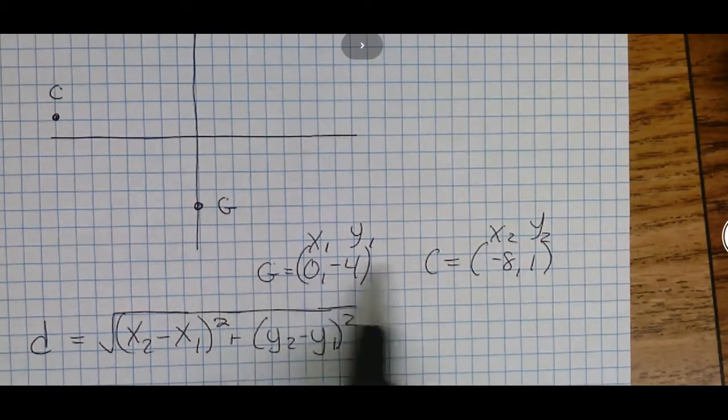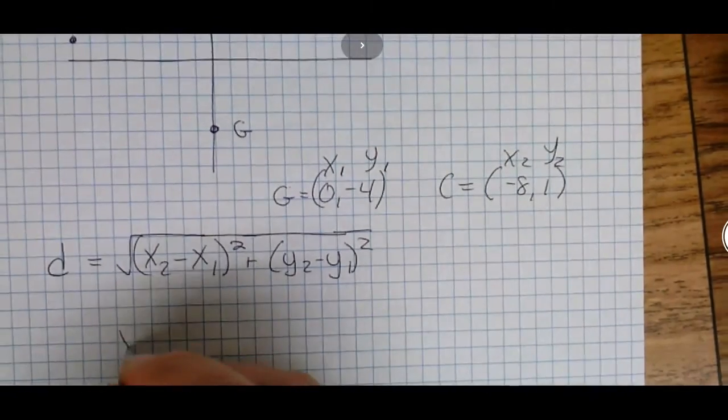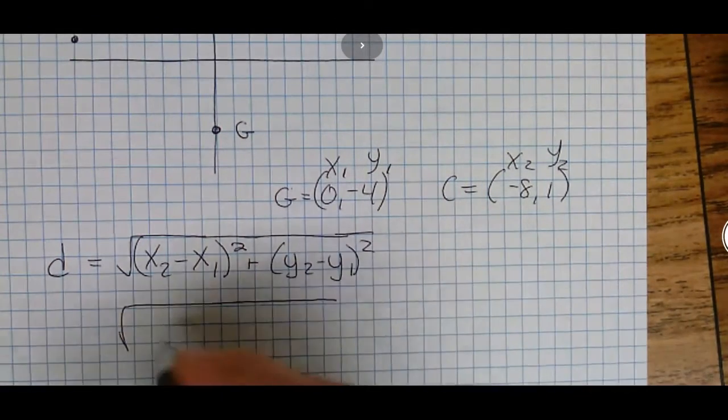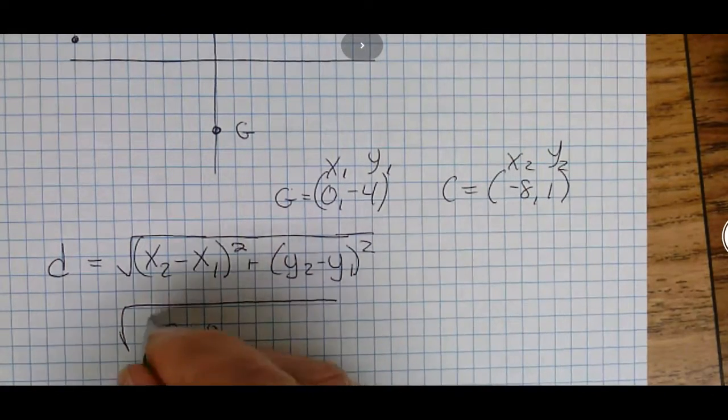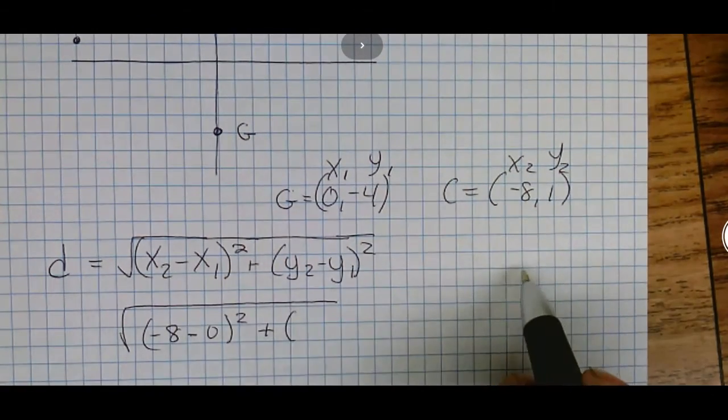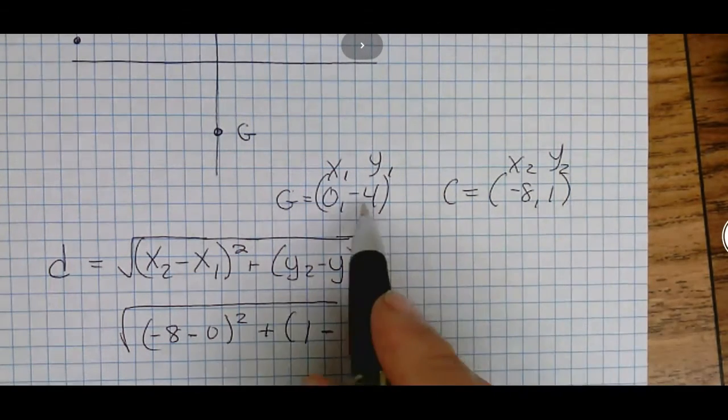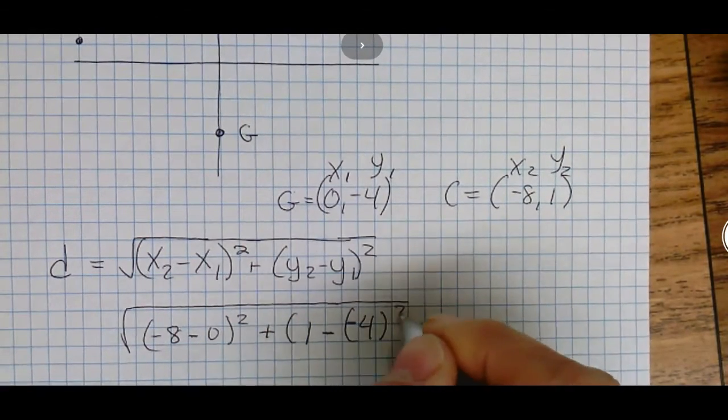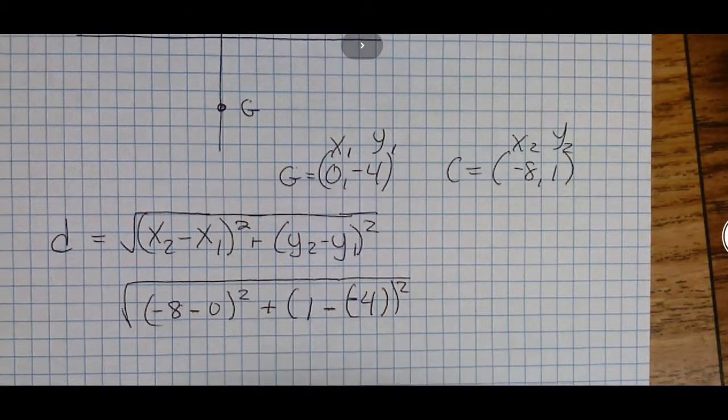We'll just plug these in. We do the square root: this is going to be our 2, so it's -8 - 0, square that, then add to that the y₂ which is 1 minus y₁ which is -4, square that answer in the end.